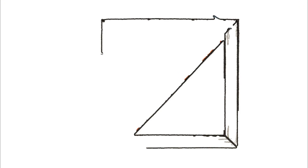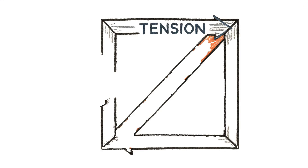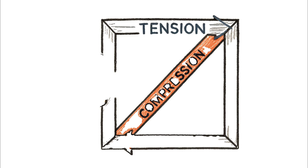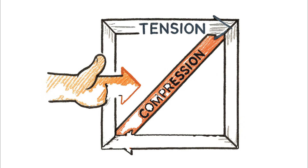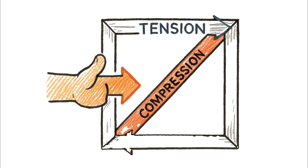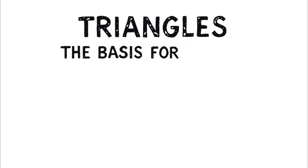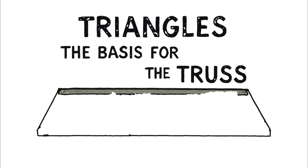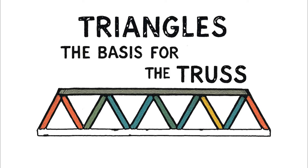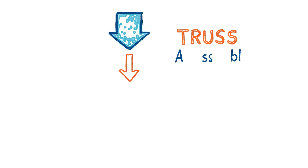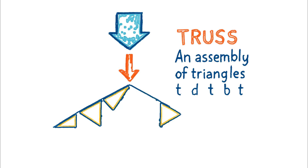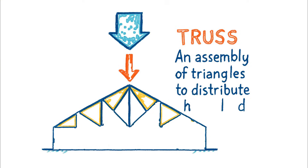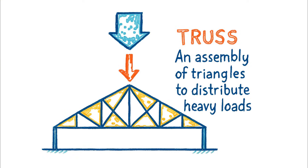When you push on the frame, that diagonal brace is put under compression, preventing the square from collapsing in on itself, while other parts of the frame are pulled into tension, holding it together. This collection of triangles is the basis for one of engineering's most powerful tools: the truss.